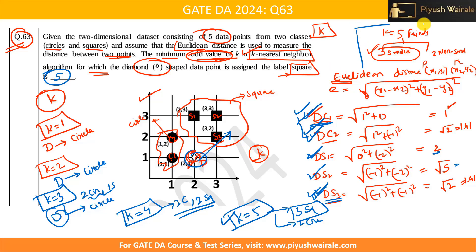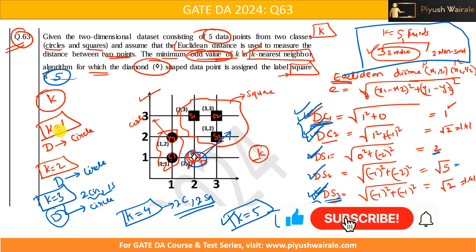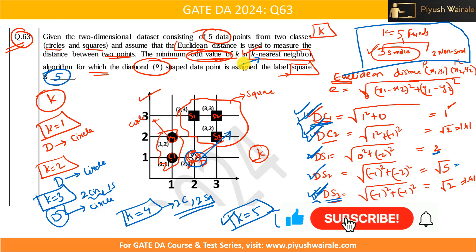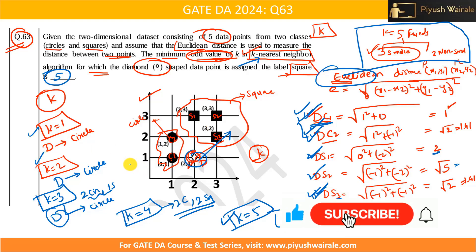To summarize: when k = 1, consider the 1 nearest friend; k = 2, the 2 nearest friends, and so on. Based on the majority class among those k neighbors, you get categorized. This question just requires understanding what k means in KNN and performing the Euclidean distance calculation for different k values.